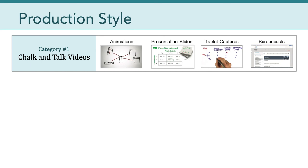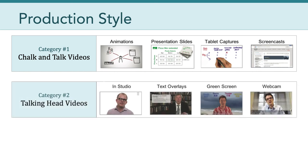Category number two is the talking head video. This is the common style involving one person — it may be scripted or unscripted, sometimes involves a demonstration of a skill, and can be used to build a connection between the person on camera and the viewer. More sophisticated talking head videos will involve multiple camera angles for easier editing and to break up monotony. Oftentimes, text or graphics will be overlaid onto the video to summarize main points, highlight keywords and phrases, or visualize what is being discussed.